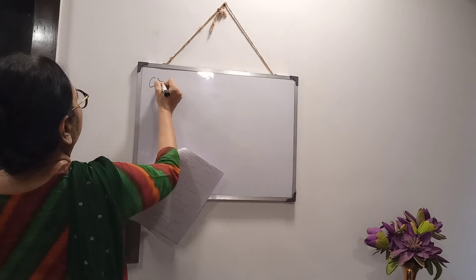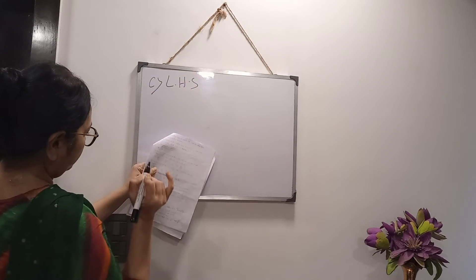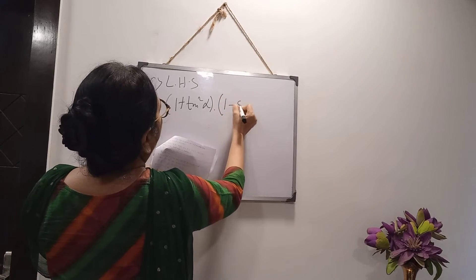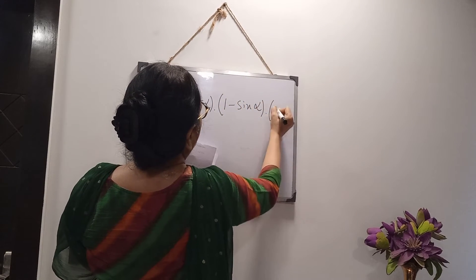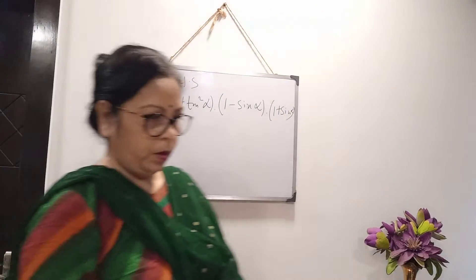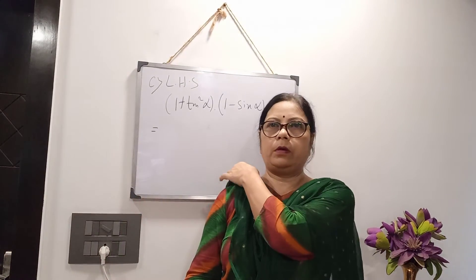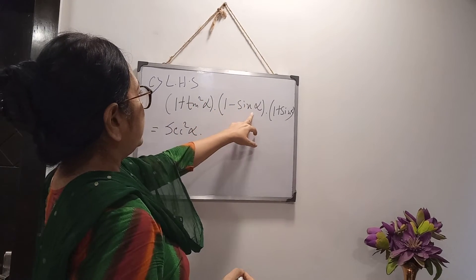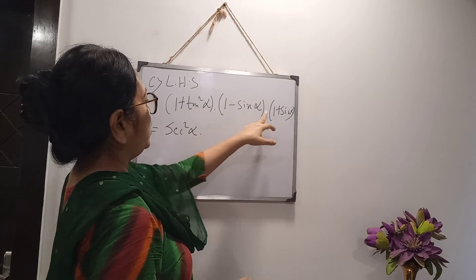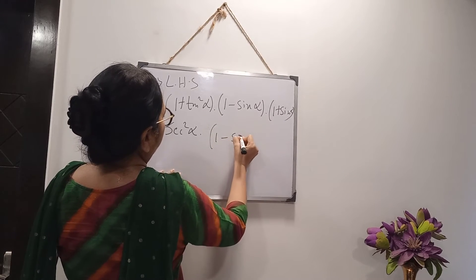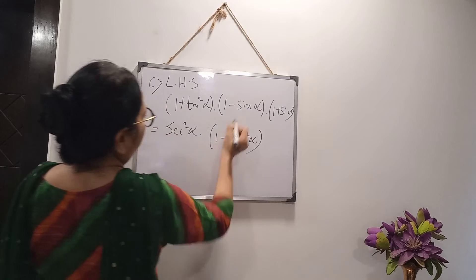Next: Prove that (1 + tan²α)(1 - sinα)(1 + sinα) = 1. From the left hand side, we use formulas. 1 + tan²α means sec²α. And (1 - sinα)(1 + sinα) is in the form (A - B)(A + B), which gives A² - B², that is 1 - sin²α. We apply the algebraic formula.